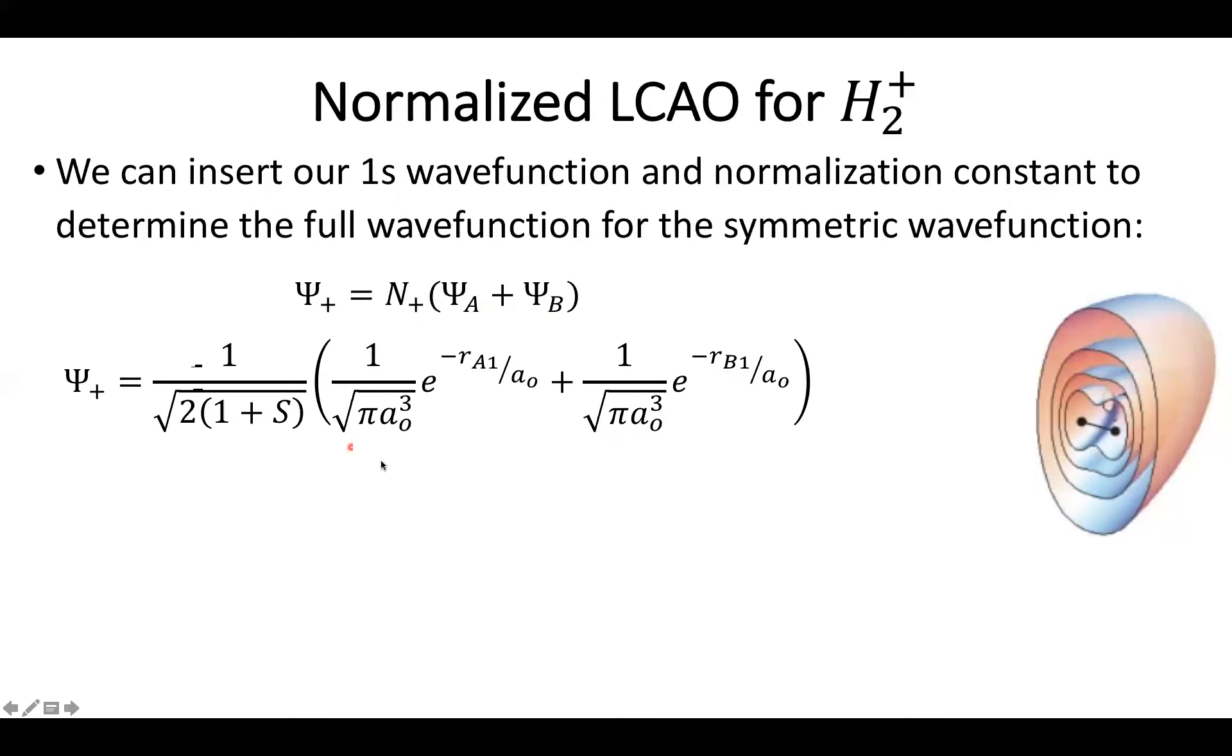And then for the wave function of the electron around B, it's the same thing, normalization, and then an exponential decay around atom B. So we can then take all of this and put it together, and what you'll notice is that these two normalization constants are exactly identical. So why keep them separate? Let's pull them out, throw them under the square root with everything else, and then what I have